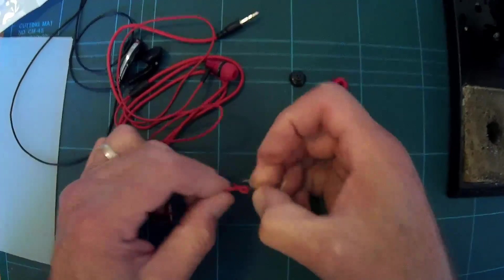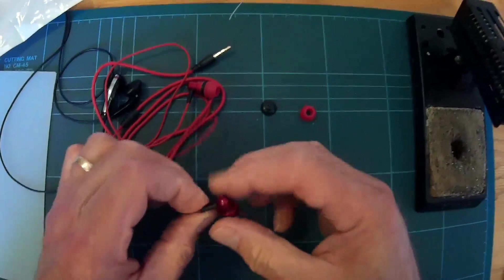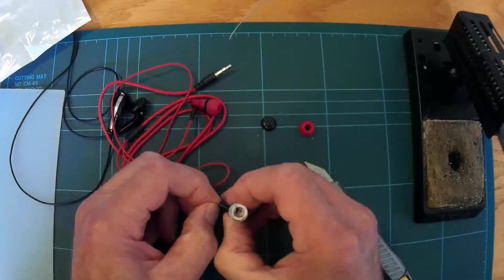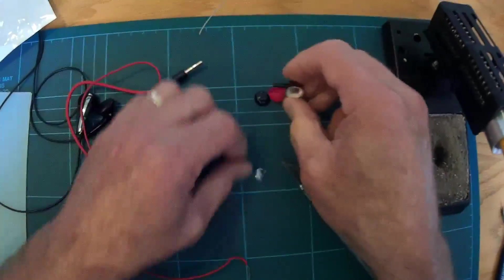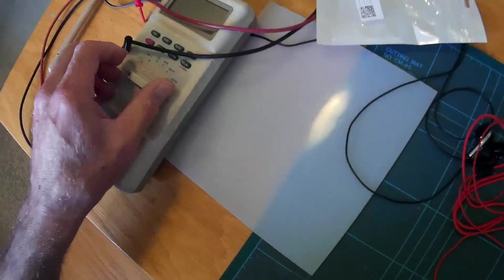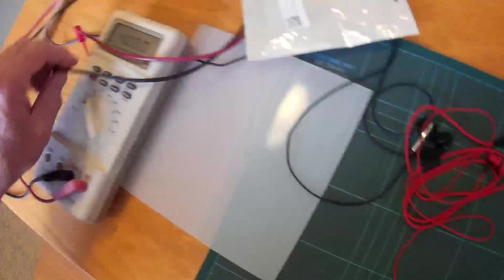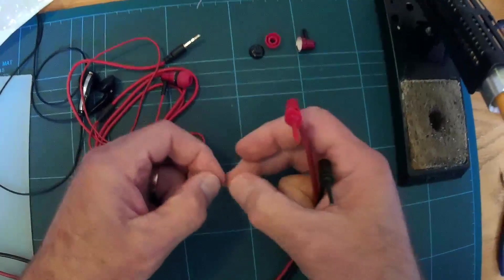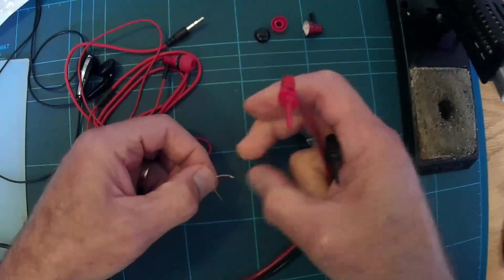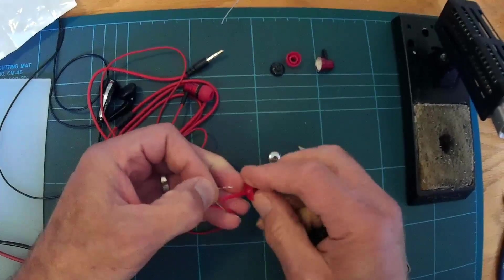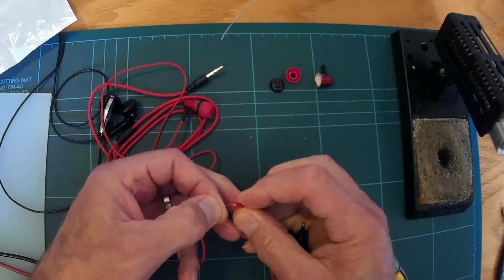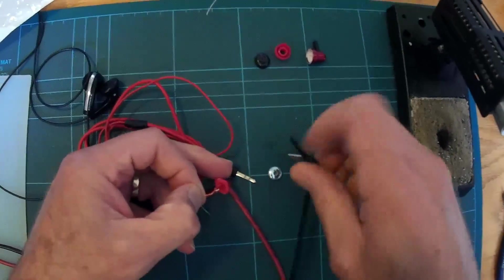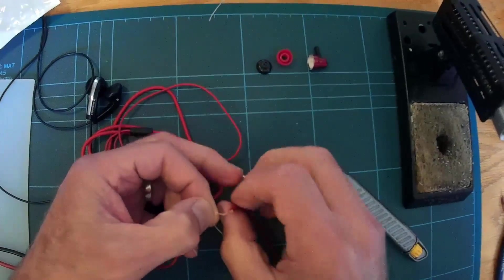These phones don't have any indication as to which one's the left phone, which one's the right phone, so we're just going to have to use a meter here just to see which one's which. Usually the plain coloured wire is the ground, but we'll just double check that. Right, and that's confirmed that, that is ground.